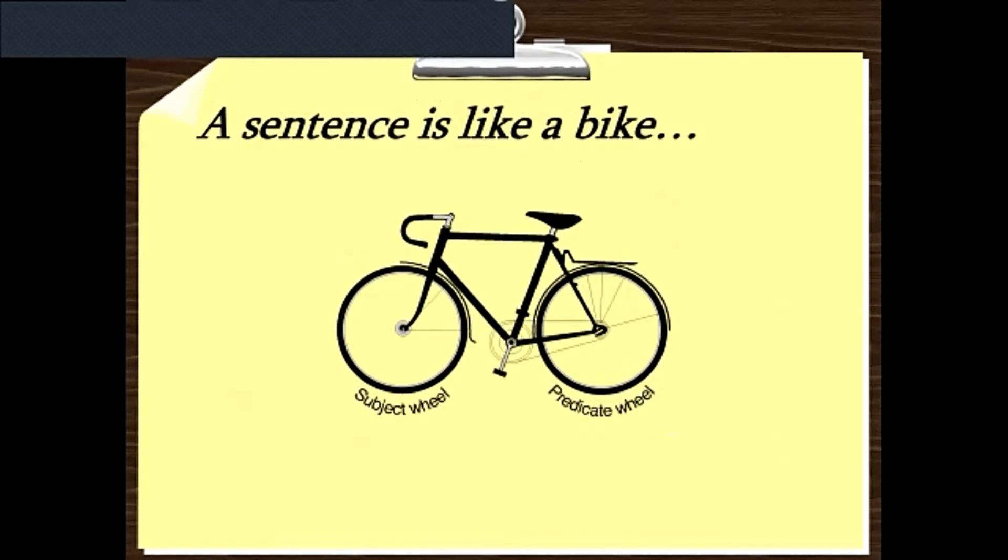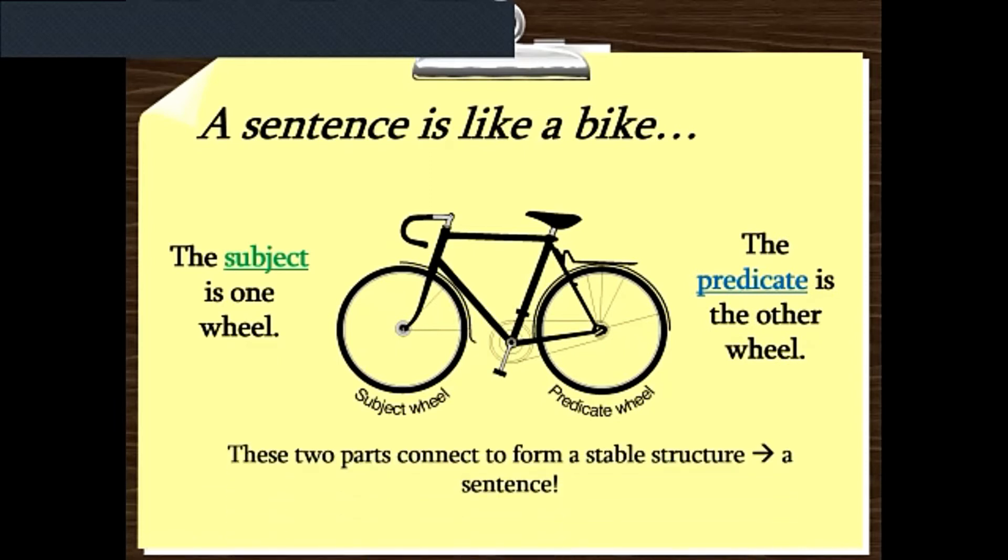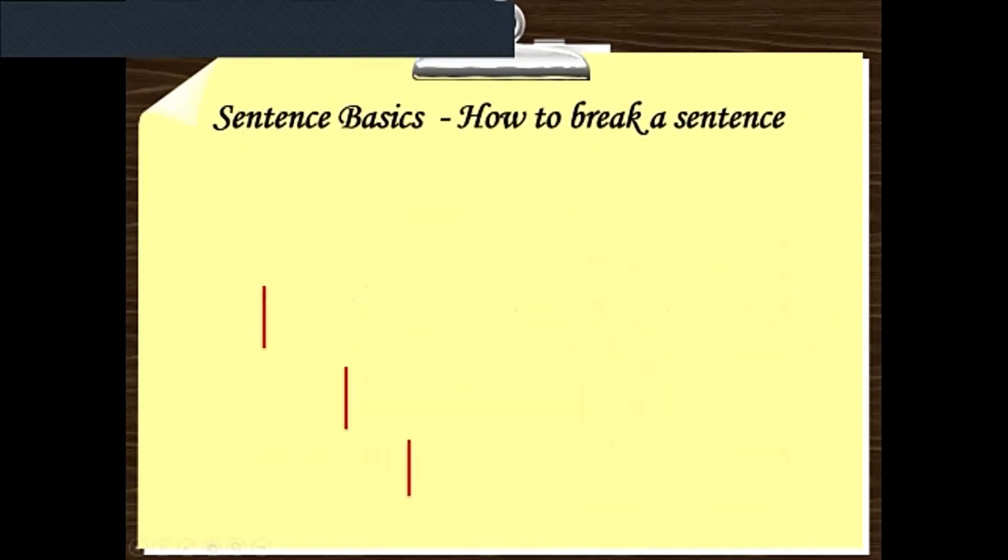It's a good example that we can see here: a picture of a bike. We can say that a sentence is like a bike which has two wheels. The first wheel we can call the subject, and the second wheel we can call the predicate. The bike can't go without the two wheels. Subject and predicate. So the subject is one wheel and the predicate is the other wheel. Those two parts are connected together to make one sentence.